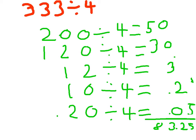So I did 200 divided by 4 equals 50. 120 divided by 4 equals 30. 12 divided by 4 equals 3. And 10 divided by 4 equals 2, but I did 2.2.